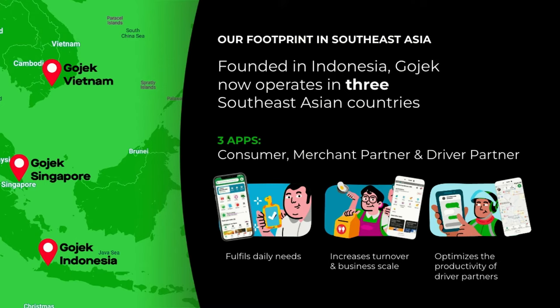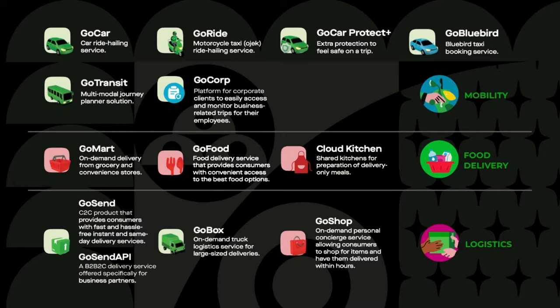Mainly we have three apps. First is a consumer app to fulfill consumer daily needs from food, ride-hailing, to logistics. Then we also have a merchant partner app — for our food delivery partners — so our goal is to scale their business. And then we also have an app for our driver partners to optimize their productivity and basically help them earn more money. We also have an API to serve most e-commerce in Indonesia.